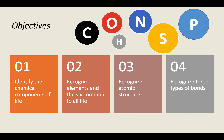So as usual, we're going to start off with your objectives for this chapter. In this PowerPoint, I have four objectives for you. The first: be able to identify the chemical components of life. Second, recognize elements and the six common to all life. Third, recognize atomic structure. And fourth, recognize three types of bonds.